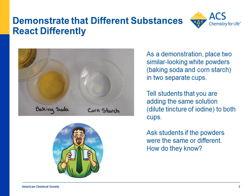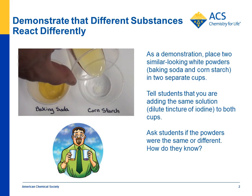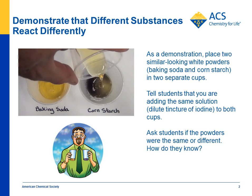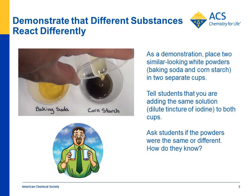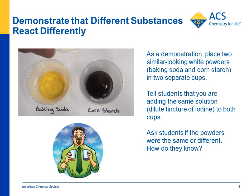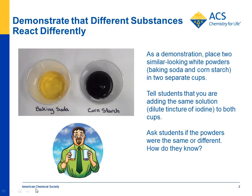You pour the iodine into baking soda, and there's no obvious change. But pouring it into cornstarch, you get a reaction that turns very, very dark purple — almost looks black. And that's you doing the demonstration right there.